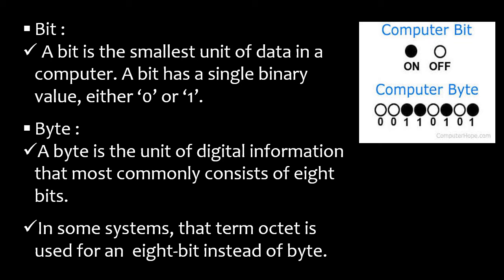Looking at the computer byte diagram, it has eight circles total. The first two circles are not colored, so we take them as zero. The next two circles are colored, so we take them as one. Then the fifth is zero, sixth is one, seventh is zero, and eighth is one.